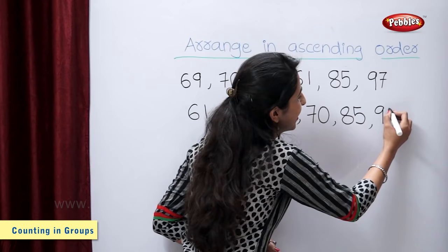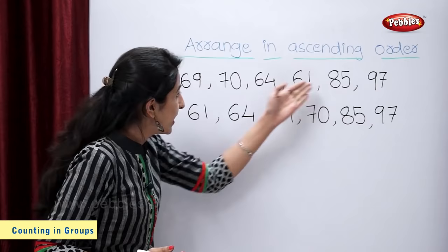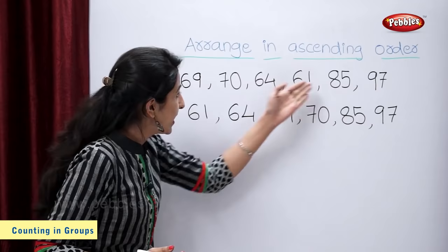So, we have arranged these numbers in their ascending order. 61, 64, 69, 70, 85 and 97.